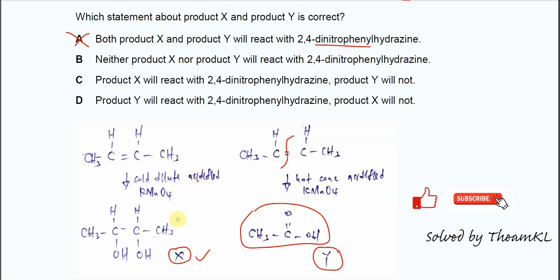So both X and Y will not react with 2,4-DNPH because they don't have the aldehyde and ketone. So therefore, answer is B. Okay, that's all. Thank you.